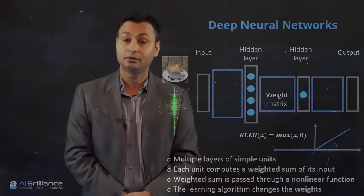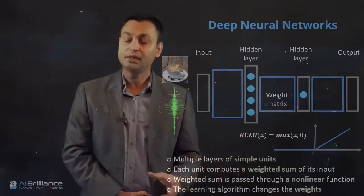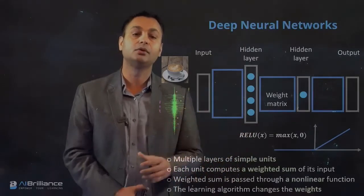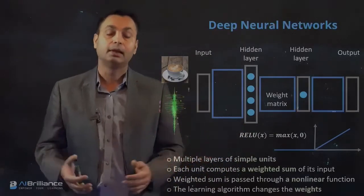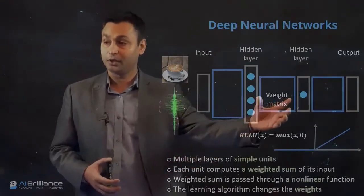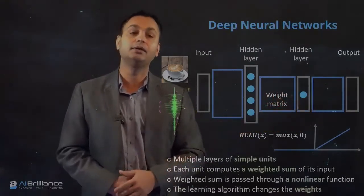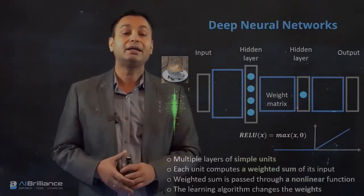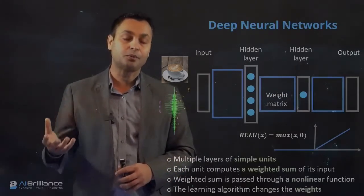Essentially what the learning algorithm does is changes the weights in different iterations. It randomly starts from somewhere and iteratively changes the values of these weight matrices in between different layers, and where it converges gives you a complex input to output mapping function.